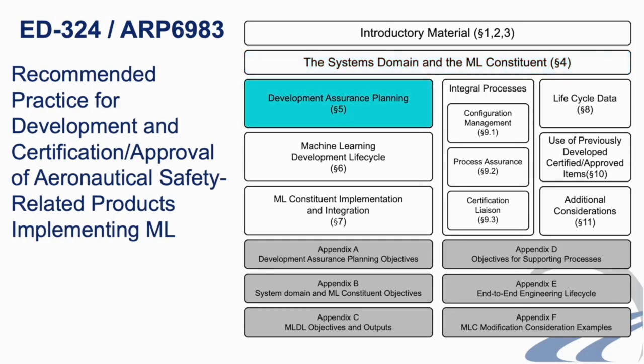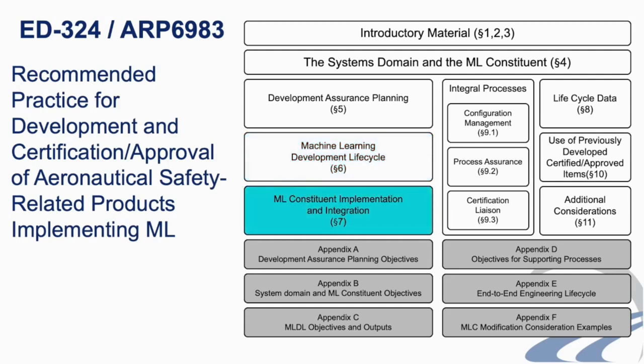Section 5 covers ML-unique aspects of development assurance planning. Section 6 introduces recommended practices that are unique to the development of the MLC, including considerations such as management of training data and model design and validation processes. And Section 7 provides guidance on ML-unique considerations for implementing an MLC in hardware and software.